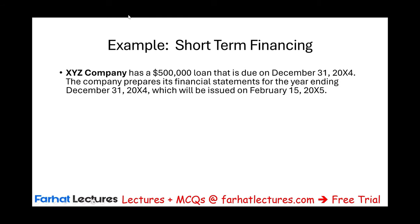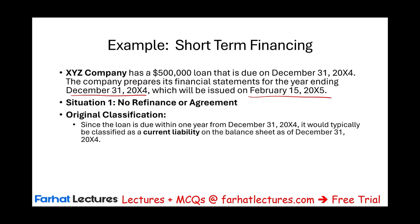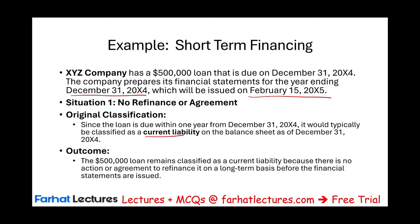Let's look at an example. XYZ company has a $500,000 loan due on December 31st, 20X4. The company prepared its financial statements as of December 31st, 20X4, which will be issued on February 15th, 20X5. Under the first scenario — no refinancing agreement — since the loan is due within one year, it is typically classified as current. The $500,000 remains classified as current because there is no action or agreement to refinance it on a long-term basis before the financial statements are issued.